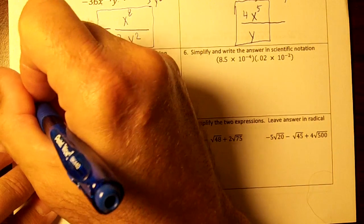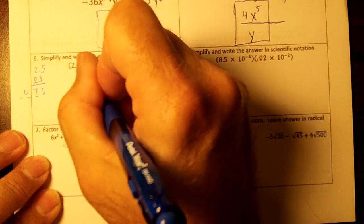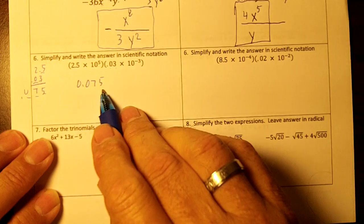There's three spots. So this right here, 2.5 times 0.03 is going to be 0.075 or 75 thousandths.